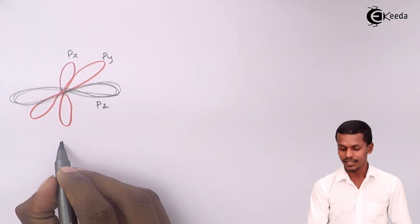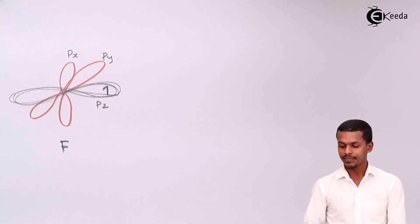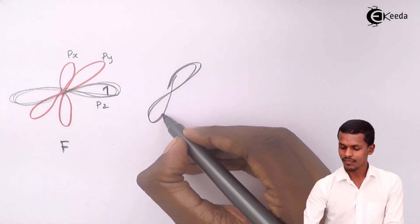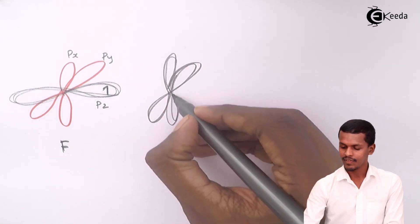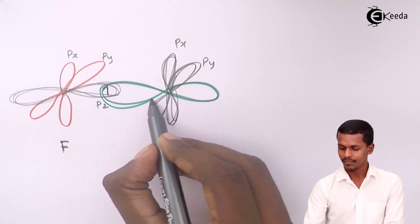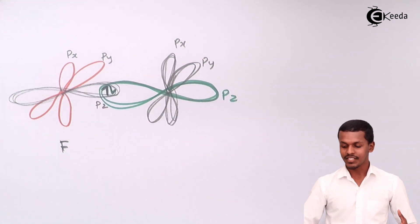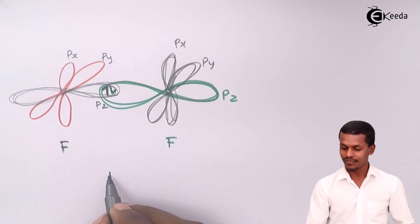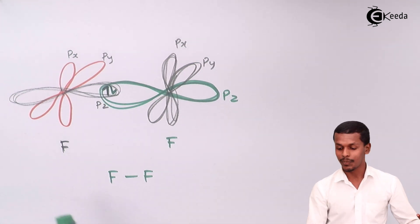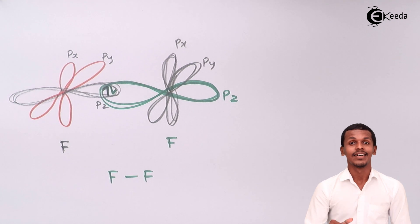One fluorine atom has px, py, and pz orbitals, with one unpaired electron in pz. The other fluorine atom similarly has px, py, and pz with one unpaired electron in pz. These electrons will have opposite spin. This is how fluorine combines with another fluorine — the pz orbitals overlap, and this is an example of PP overlapping explaining the F2 molecule.